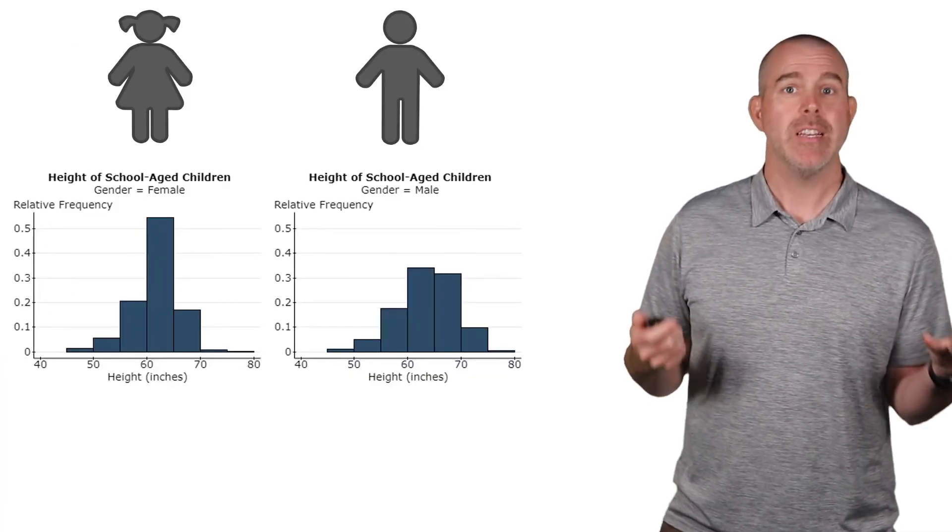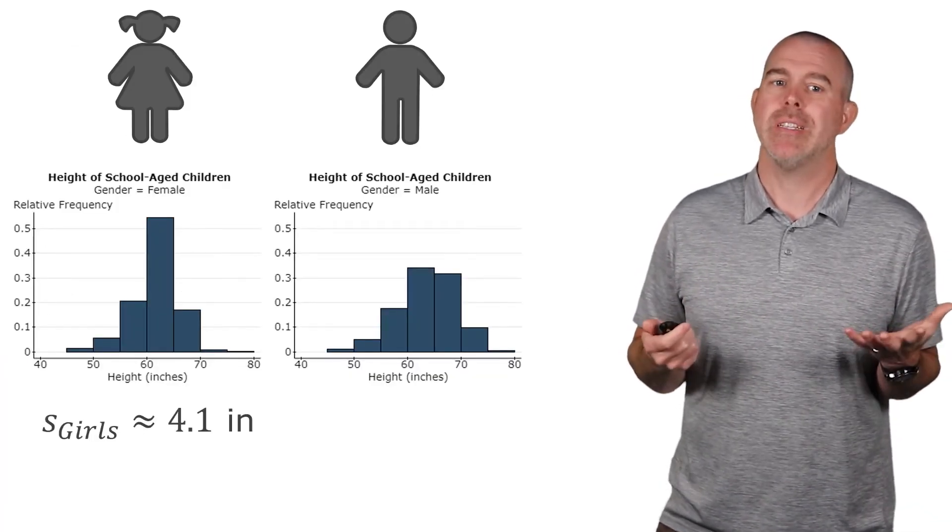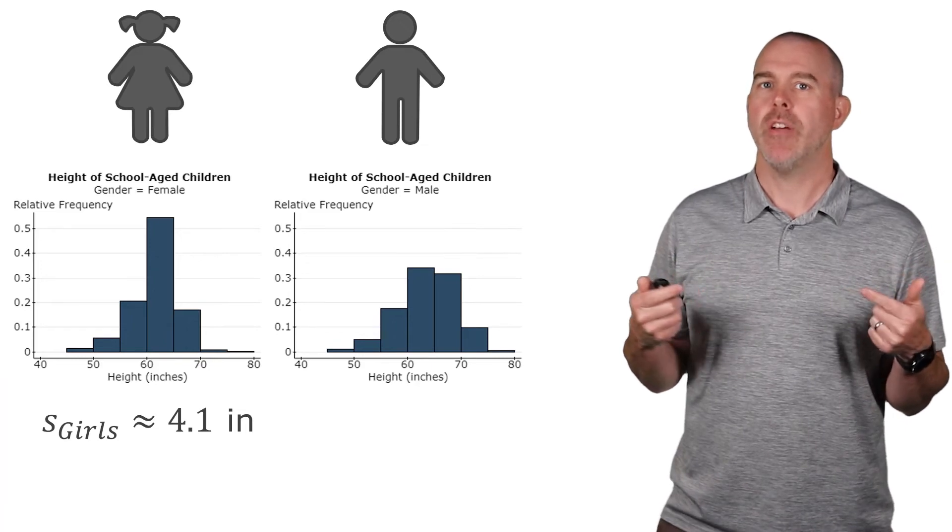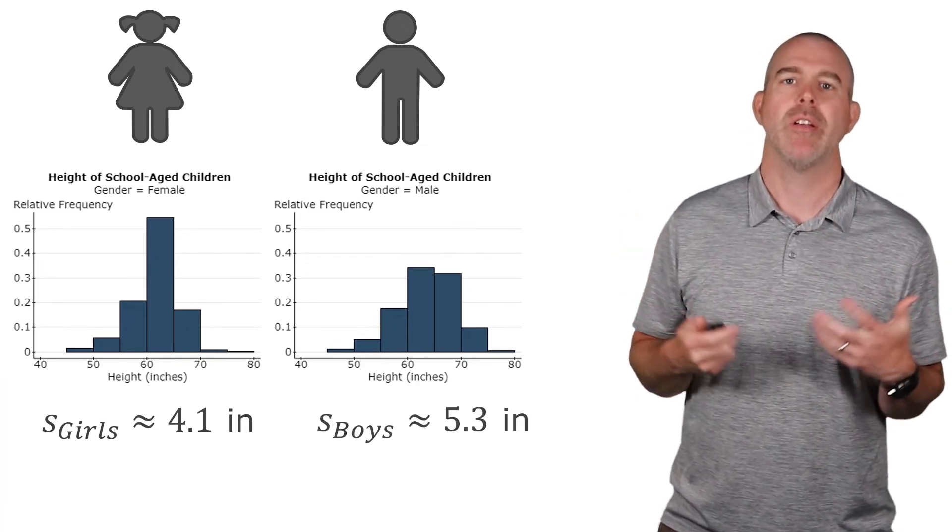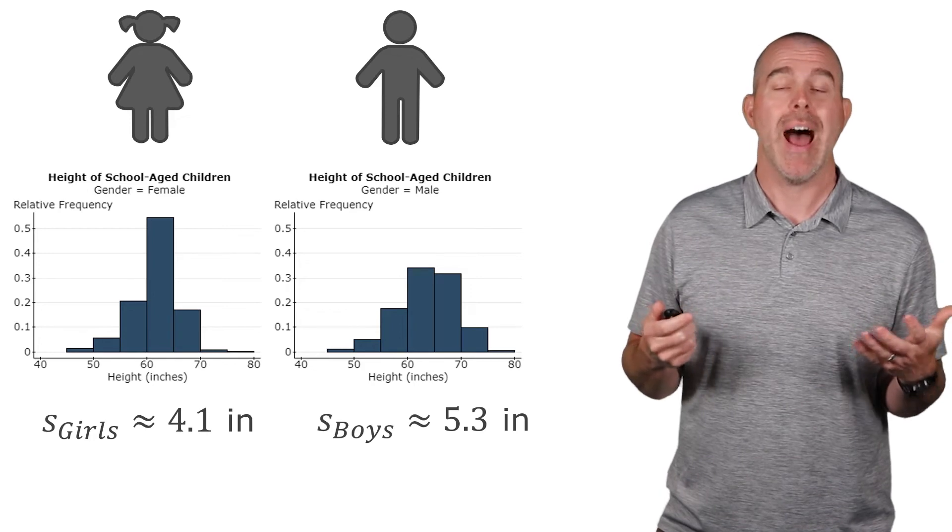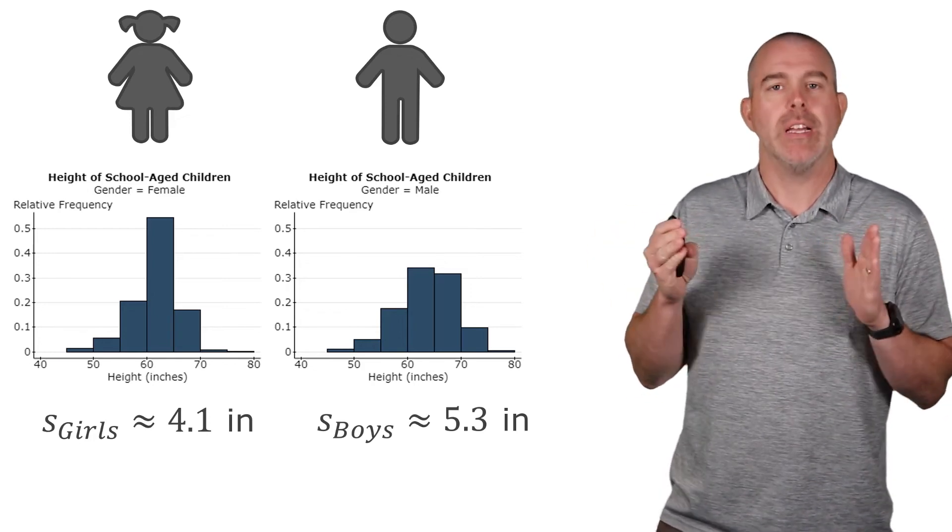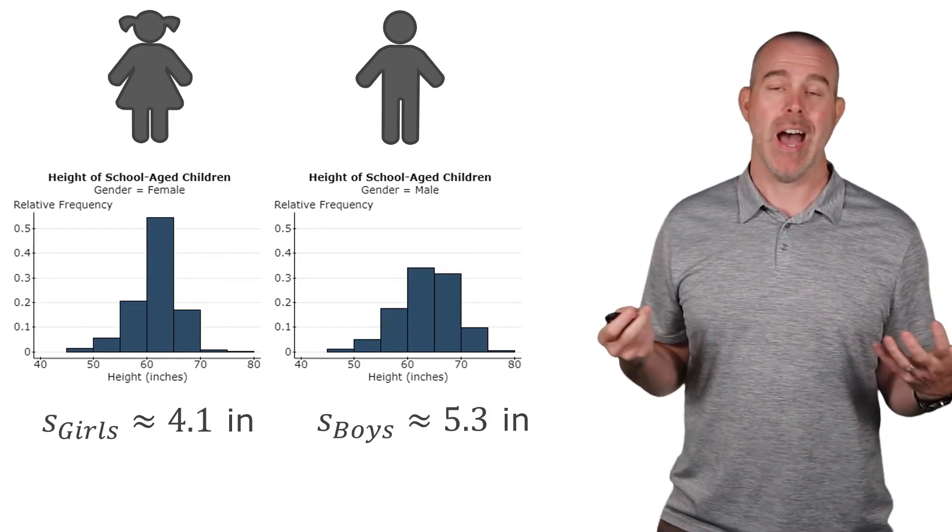And in fact, if you look at those histograms, you can see the standard deviation of the girls. They're much more condensed than the boys. So the girls are less spread out. Their heights are more condensed than the boy heights.